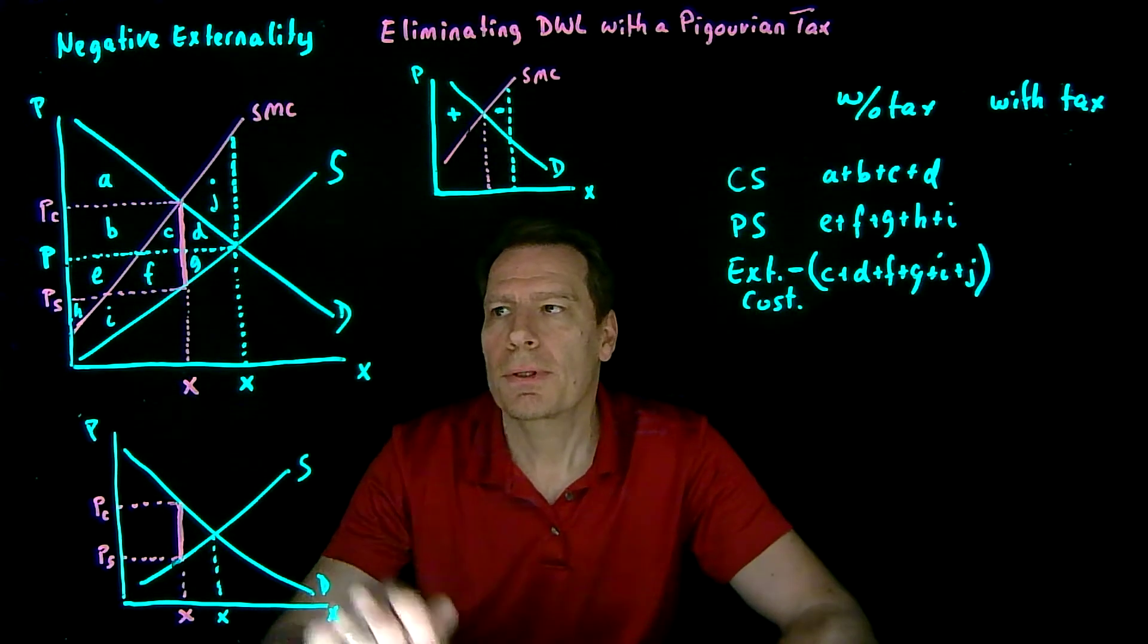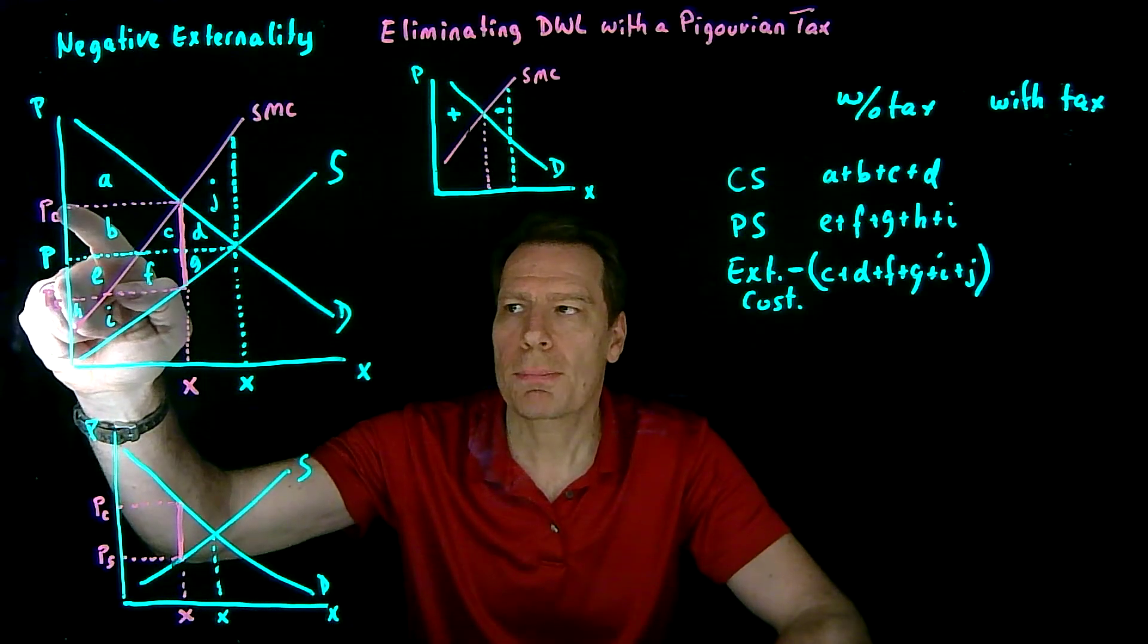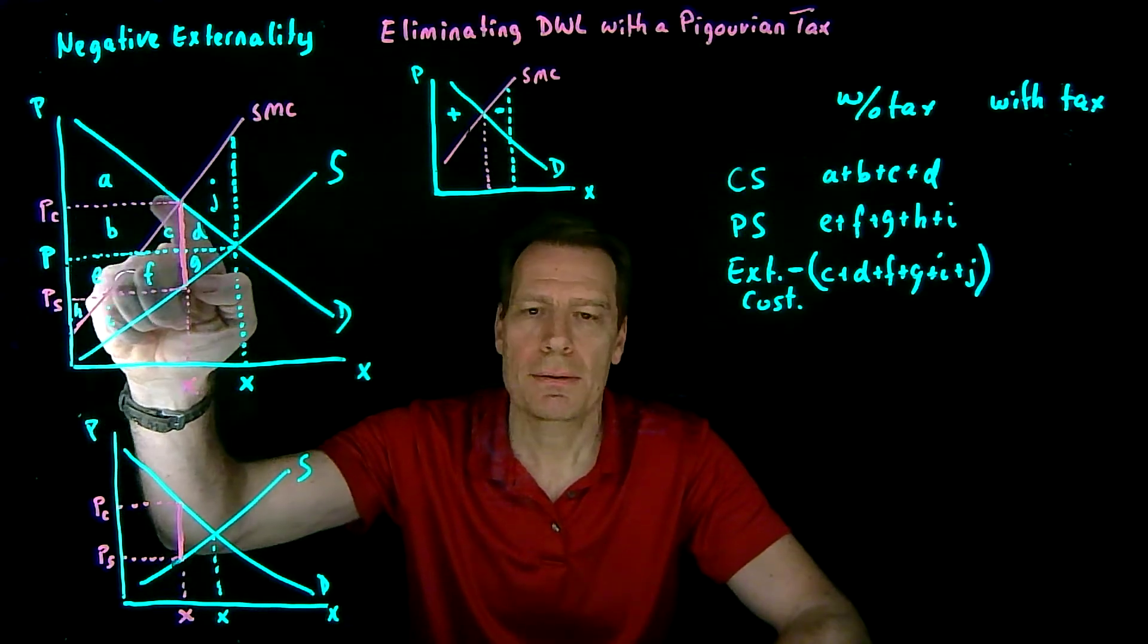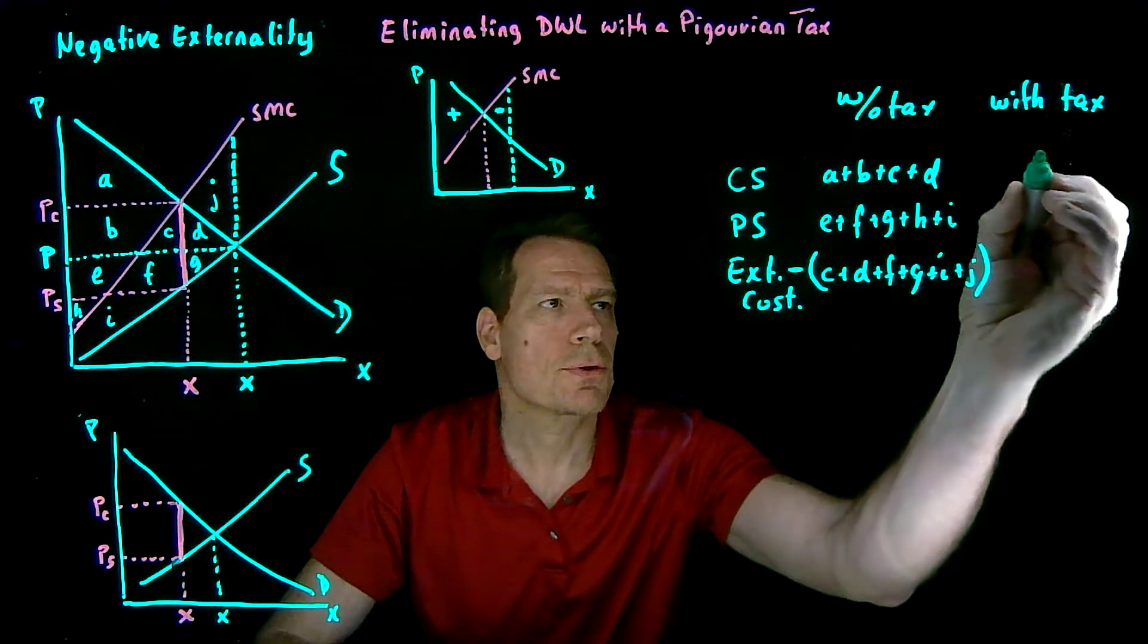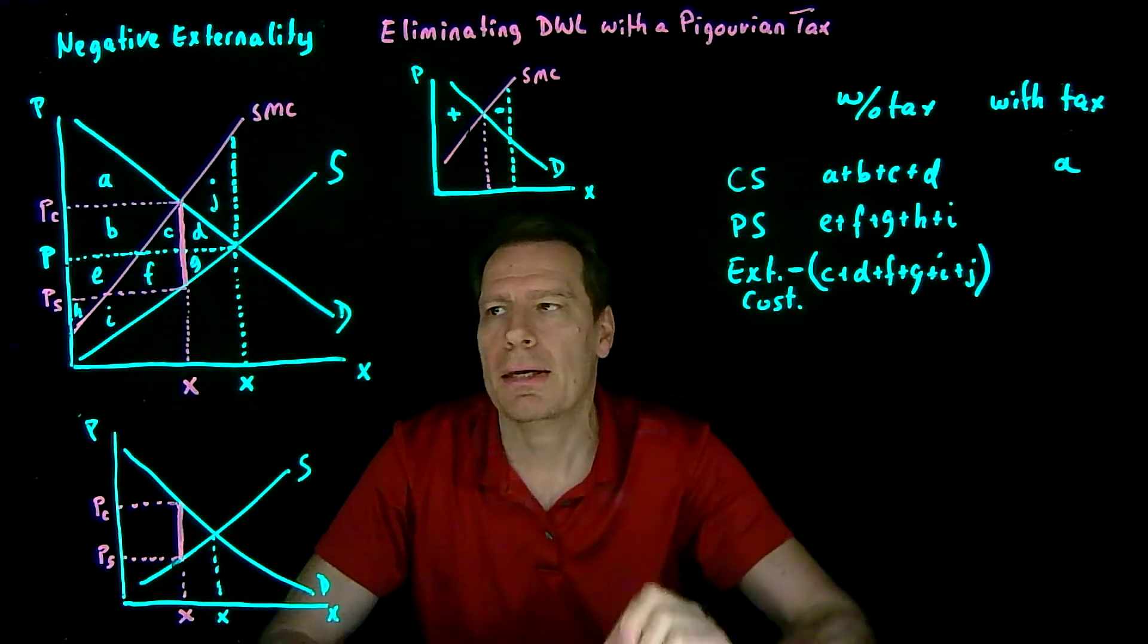What about with the tax? Well, the consumer surplus would shrink because the price with the tax would rise. And so we just get everything above that price, up to the demand curve. So consumer surplus shrinks to area A.